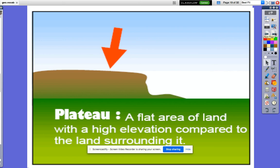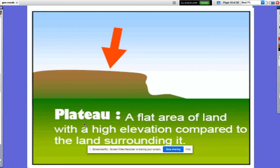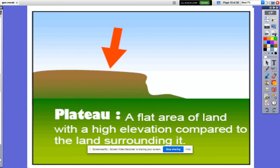A plateau. A plateau is a flat area of land with a high elevation compared to the land surrounding it. You can see the word plate in there. So a plateau is like a table, and you can think of it as what you put your plate on. Plateau.